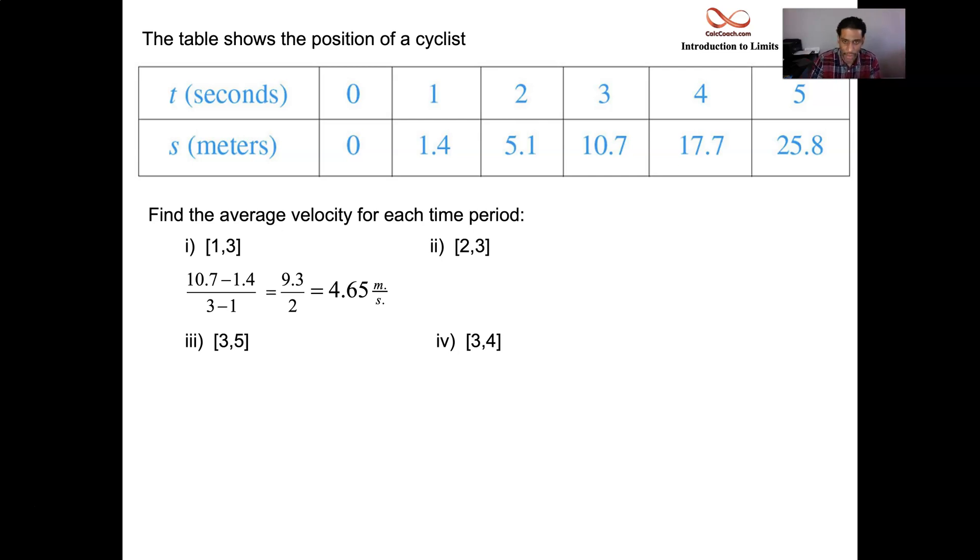All right, great. How about the time interval from two to three? So from one to three, that's a time interval of two seconds in length. Now let's come in closer. So from two to three, we have a difference there, 10.7 minus 5.1 is 5.6 meters per second. All right, great. So it's faster than the previous one. That second part of that two second interval, you were going at a faster rate. Let's move on the other side of three. Let's go from three to five, two second interval. So 25.8 minus 10.7 is 15.1. Cut that in half, you end up at 7.55. So over that two second interval, you were going even faster.